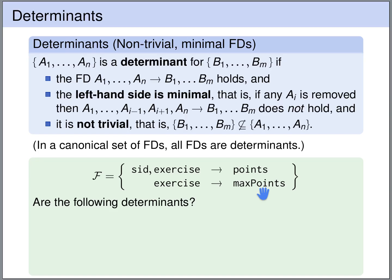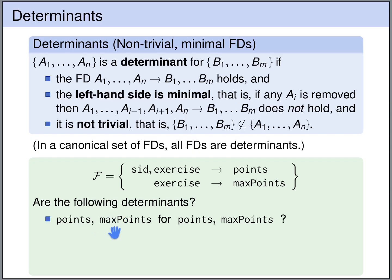Now let's discuss whether the following are determinants. Is the set of attributes {points, max_points} a determinant for {points, max_points}? The answer is no, because this is a trivial functional dependency, and a determinant should not be trivial. The left-hand side should not be a superset of the right-hand side.